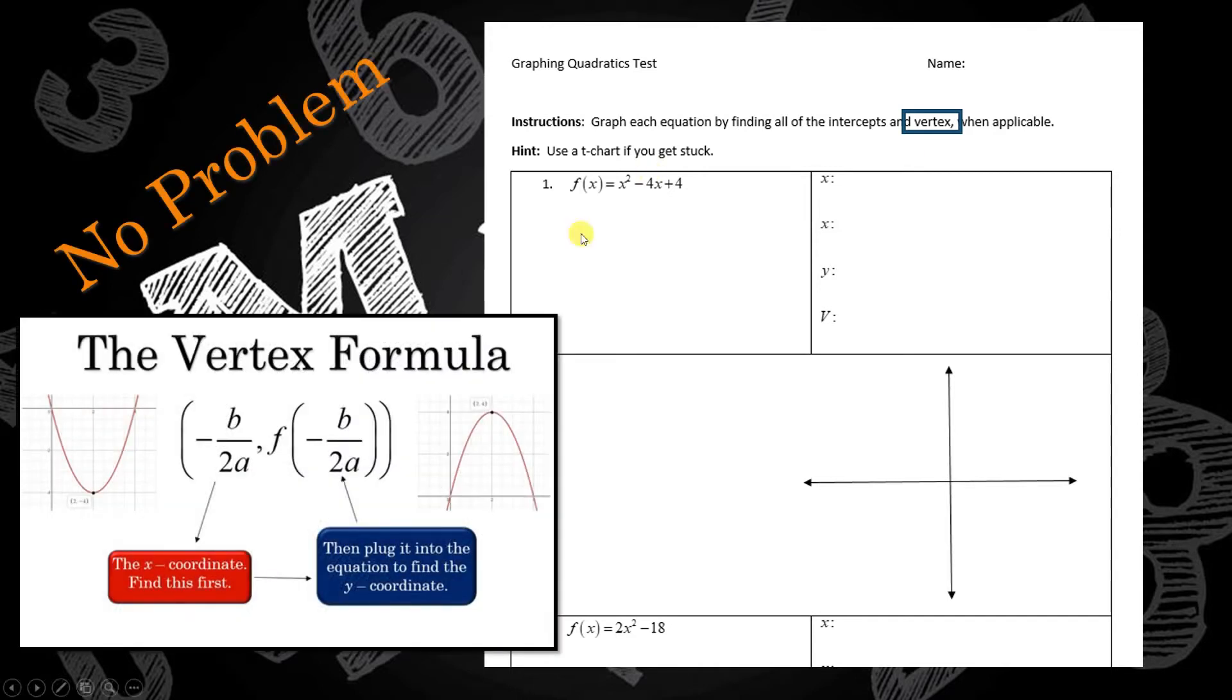Negative b over 2a, that's the x-coordinate of the vertex. So all you got to do is find that and then plug it in. But have you ever wondered where that comes from? Why is it negative b over 2a? That's what we're going to explore in this video. So let's get to it.